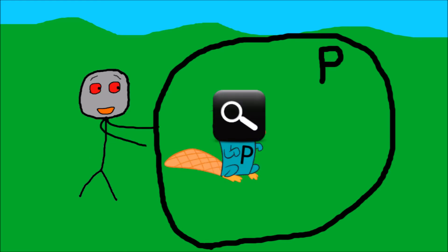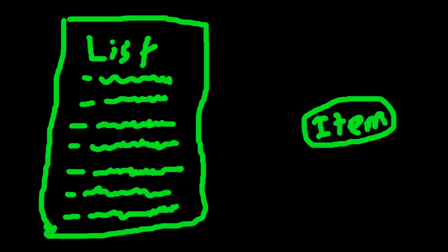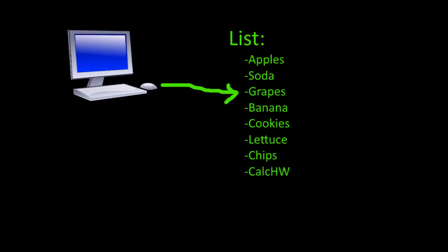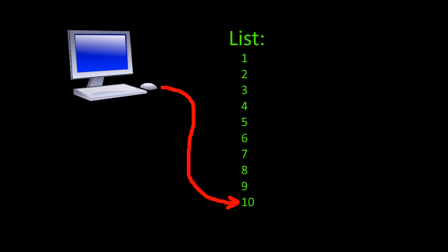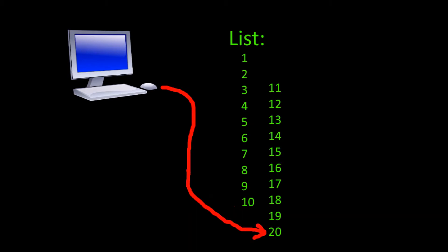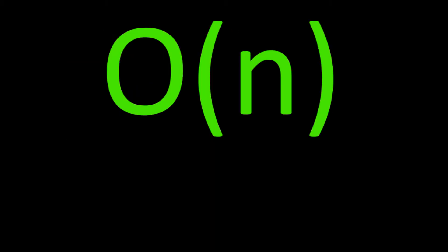Now let's look at some algorithms in our polynomial time species. Meet linear search. The objective of this algorithm is: given a list and given an item, we want to see if said list contains said item. If we have a computer doing this step by step, the worst case is for the item to be at the very end of the list. That means if I have 10 items, I do 10 steps; 20 items, 20 steps; N items means N steps. Therefore, our Big O is O(N). N is a polynomial function.